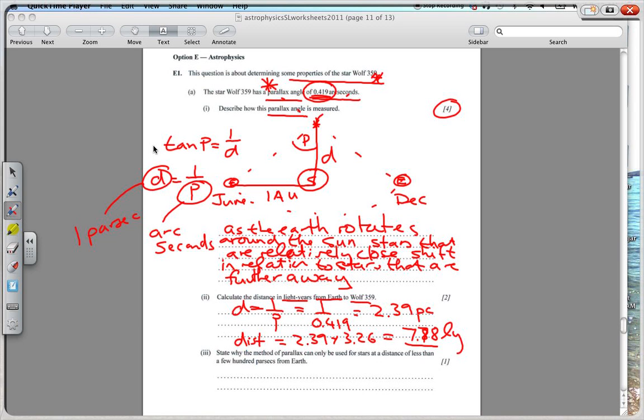And then finally here, state why the method of parallax can only be used for stars at a distance of less than a few hundred parsecs from the Earth. Basically, the angle of parallax becomes much too small. It becomes too small to be measured accurately.